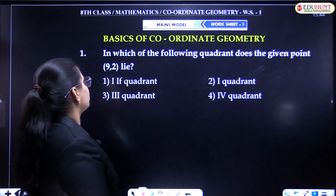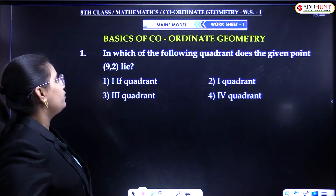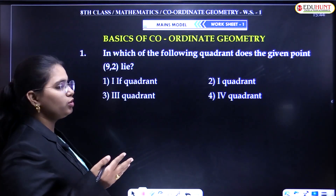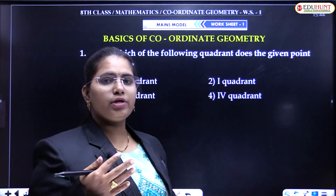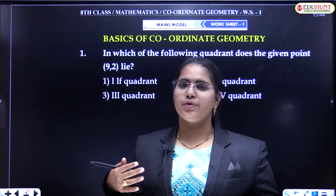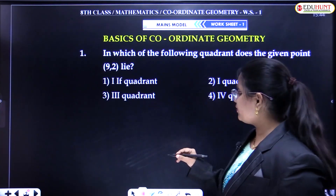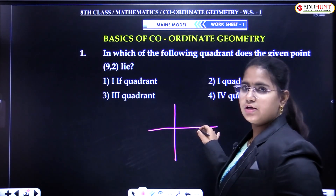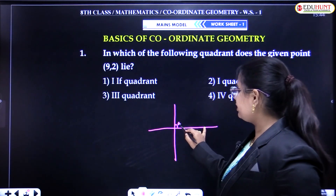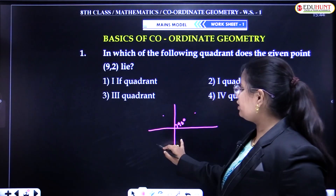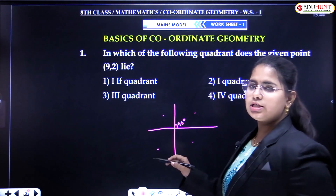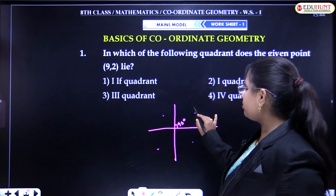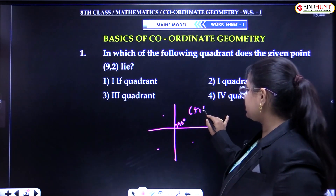The first question of exercise one is: in which of the following quadrants does the given point (9, 2) lie? Before going into the solution, let's recall the concept. If we take two perpendicular lines making 90 degrees, we get four equal parts. Each part is called a quadrant. In the first quadrant, both coordinates are positive.